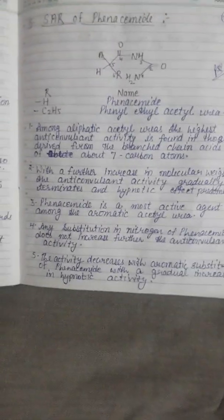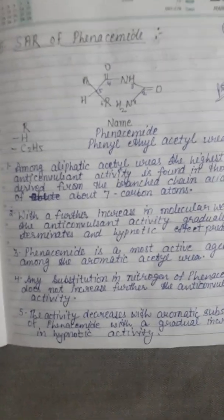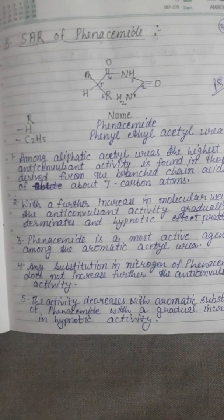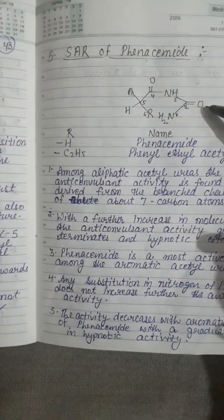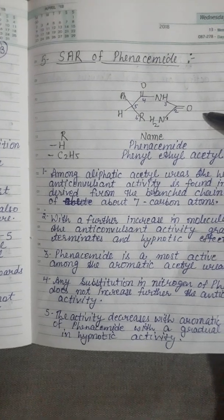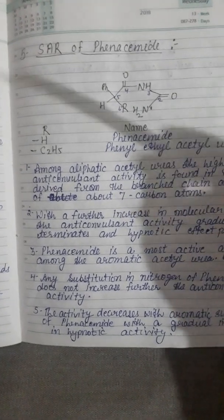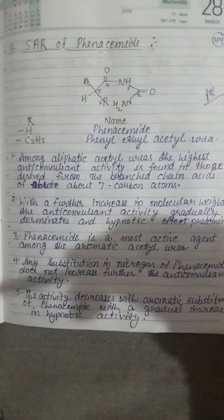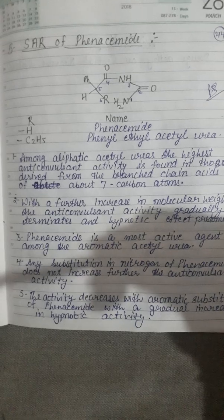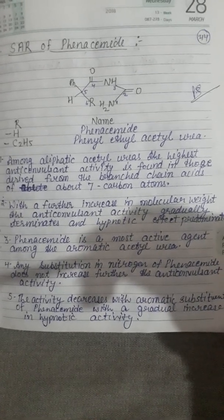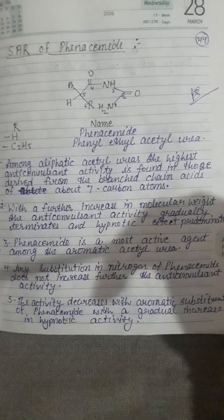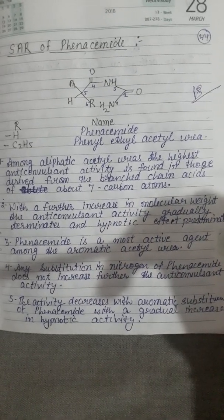The next category is SAR of phenacemide — structural activity relationship of phenacemide. Among aliphatic acetylureas, the highest anti-convulsant activity is found in those derived from branched-chain acids of about six carbon atoms.